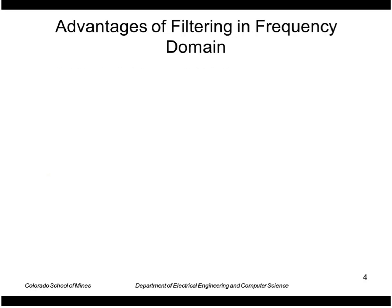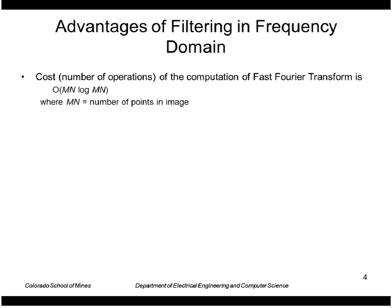Why would we want to do this? Basically for large filters it's cheaper to do convolutions using the frequency domain method. The fast Fourier transform cost is O(MN log MN) where MN is the number of points.